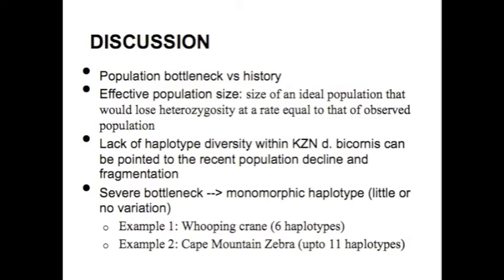Our discussion addresses population bottlenecking — an event causing a great loss in population size, decreasing the gene pool due to loss of alleles. This can be the cause of a single mtDNA haplotype in the KZN remaining population and therefore cause a loss of genetic variation. Severe bottlenecking can cause a monomorphic haplotype, meaning little or no variation in the phenotype.